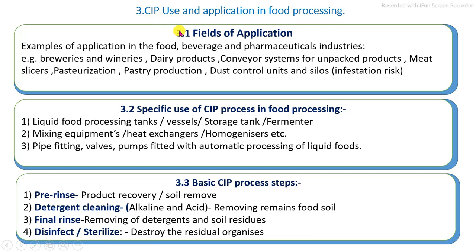The specific application of this CIP system is mostly in all liquid food processing industries, like brewing, wineries, dairy processing, and also for meat, fish, and poultry processing industries for the cleaning process.